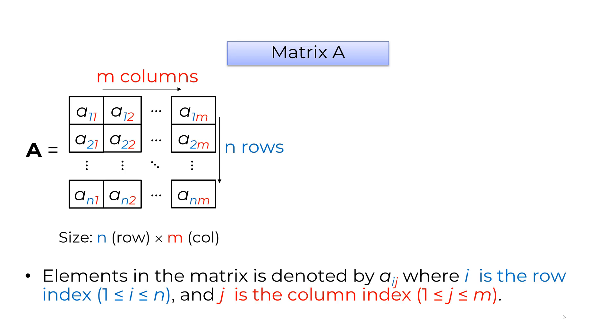A matrix is a two-dimensional set of elements organized into rows and columns with square brackets. If you have an N by M matrix, it means you have N numbers of rows and M numbers of columns.